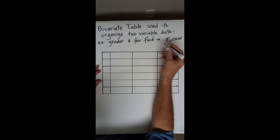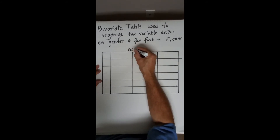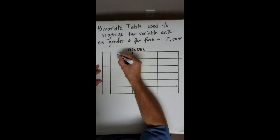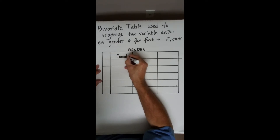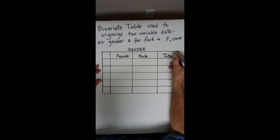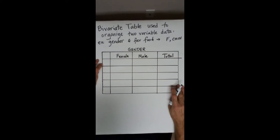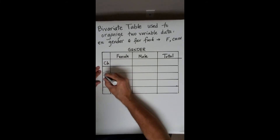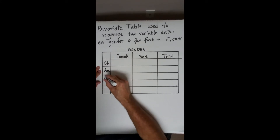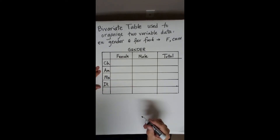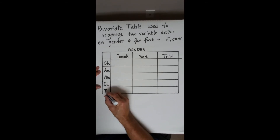Across the top of the table we put gender: female, male, and a total column. On the left side we have the food categories: Chinese food, American food, Mexican food, Italian food, and a total row at the bottom.